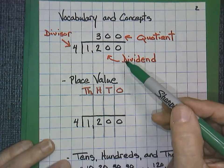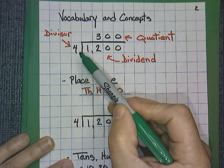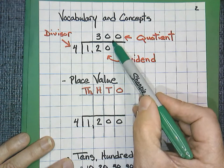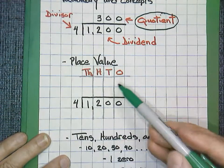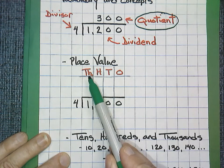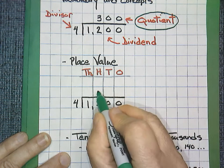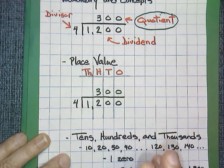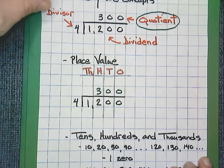Remember our division vocabulary: the large number we're dividing is called the dividend. The number of equal groups we're looking for — in this case 4 — is the divisor. And our answer — in this case 300 — is the quotient. Please keep in mind place value. 1,200 is our dividend: the 1 is in the thousands, the 2 is in the hundreds, and then we have the tens and ones. Notice that the 3 in our answer was in the hundreds. It's a good habit to keep your place values lined up, especially as problems get harder and we move into decimals in the future.